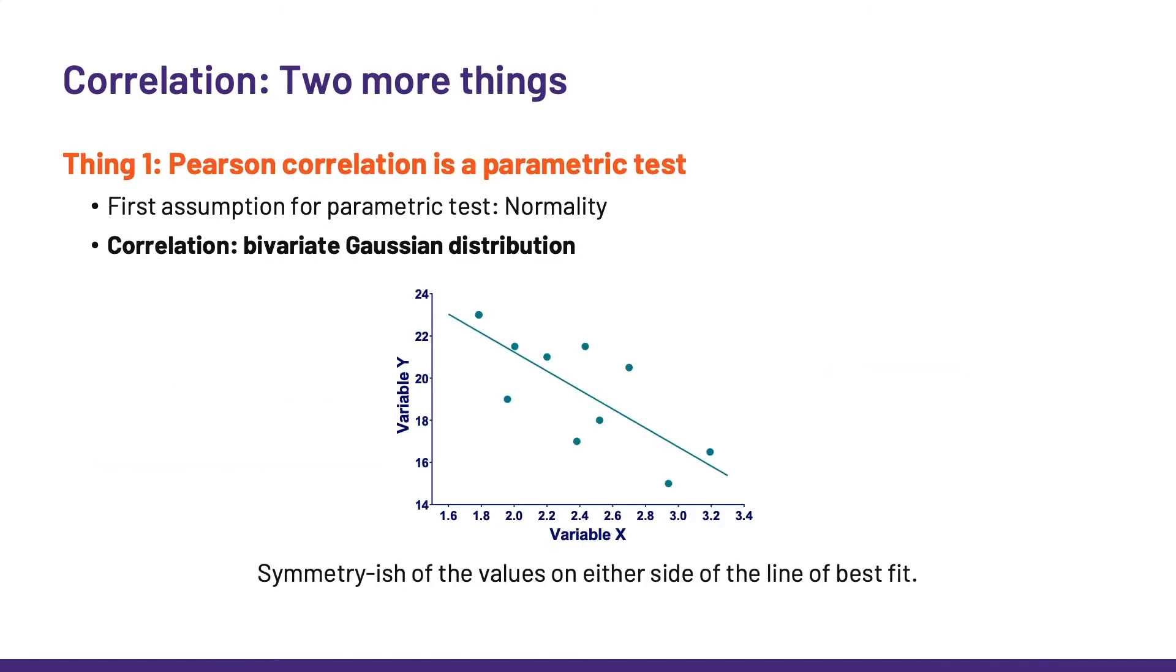Okay, so two more things before we see how we run a correlation in Prism. First, we are talking here about the Pearson correlation, which is a parametric test. It means that we need to explore the data to check that they are, among other things, normally distributed, which we can assess kind of by checking for the symmetry of the values on either side of the line of best fit.